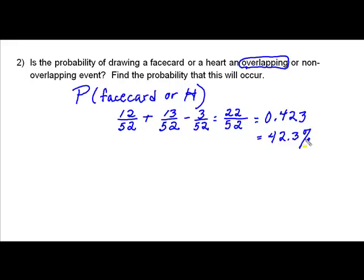To recap, be very careful that when you're dealing with an overlapping event, that you subtract off the items with the double characteristics so that they are not counted twice. Remember that without doing that, we would have those three cards as part of this 12 and as part of that 13. So that's why we need this adjustment. Thank you for viewing this webcast.